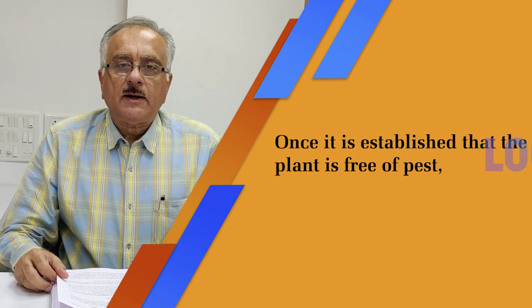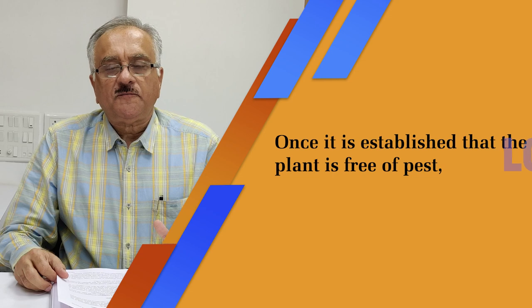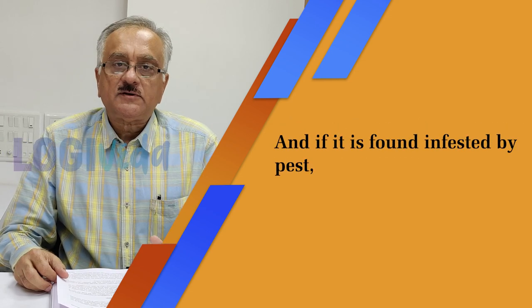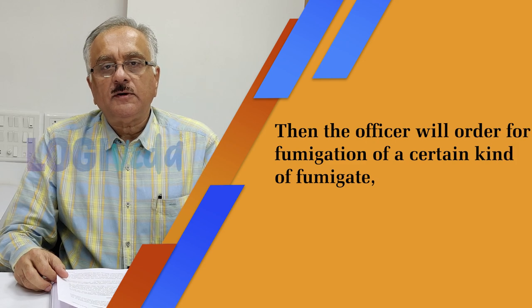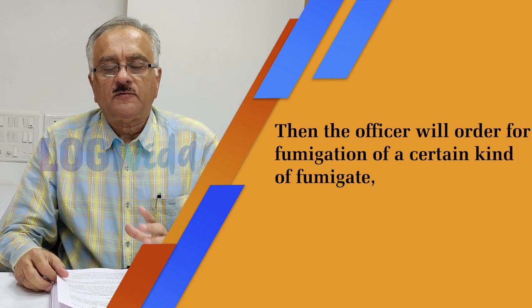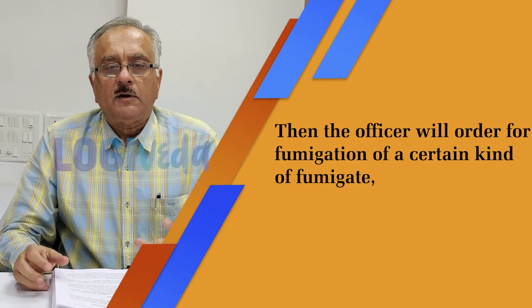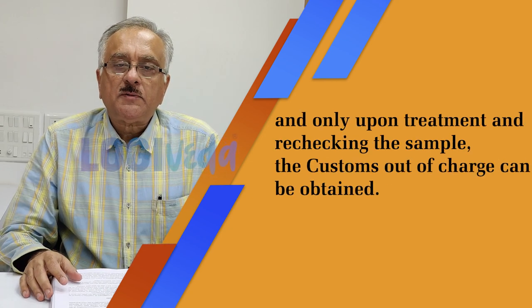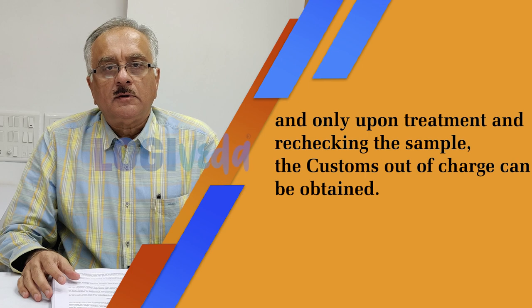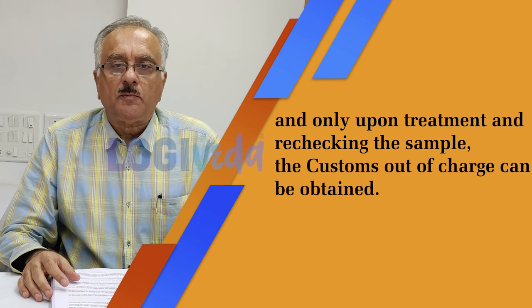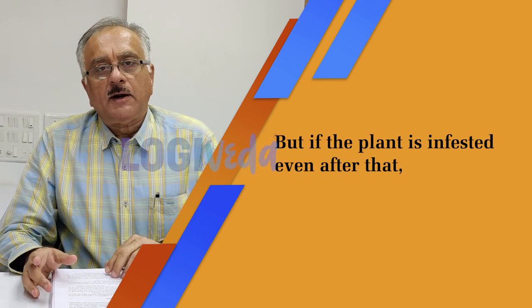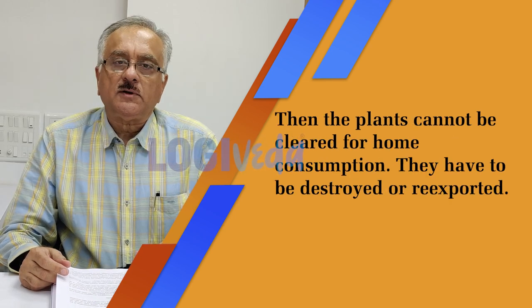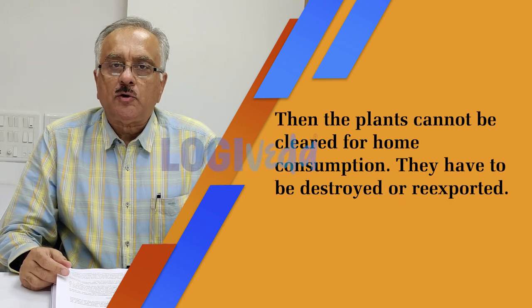Once it is established that the plant is free of pest, it will be allowed clearance for home consumption. If it is found infested by pest, the officer will order fumigation using a certain kind of fumigate — a certain kind of insecticide, pesticide, or weedicide — and only upon treatment and rechecking the sample can the customs out-of-charge be obtained. But if the plant is still infested even after that, then the plants cannot be cleared for home consumption; they have to be destroyed or re-exported.